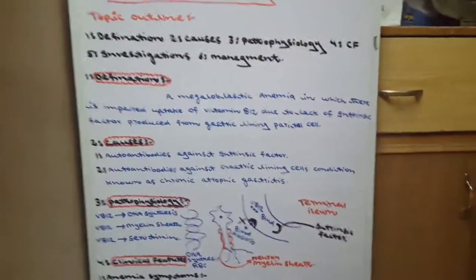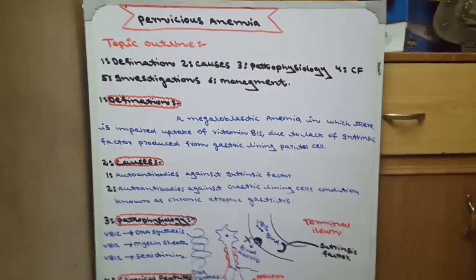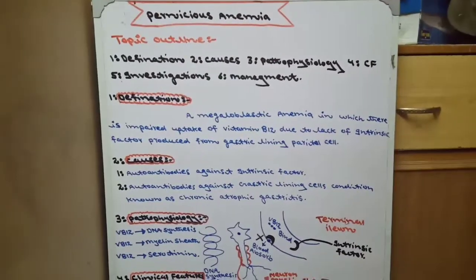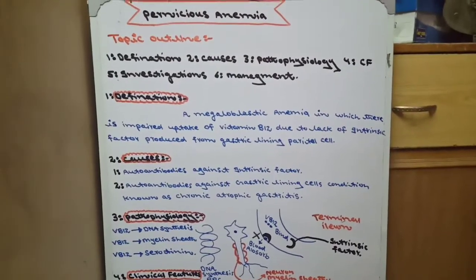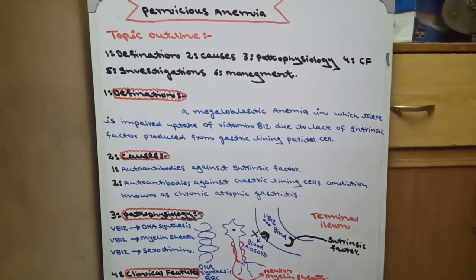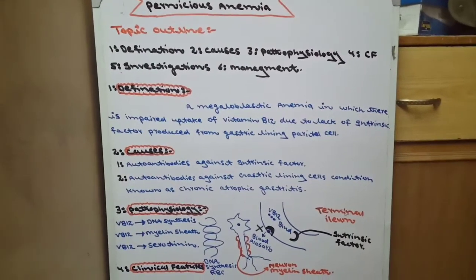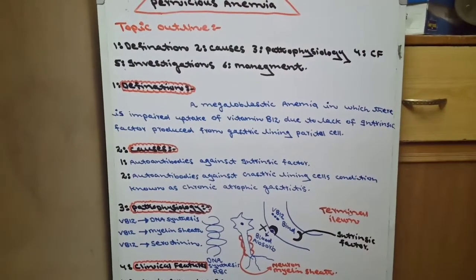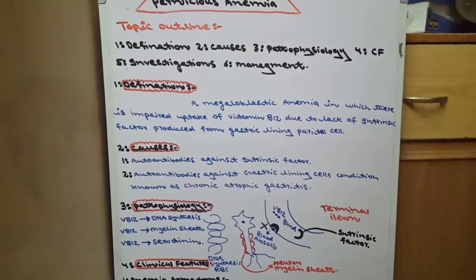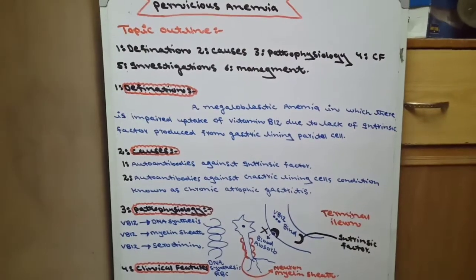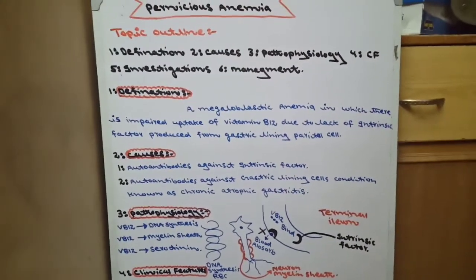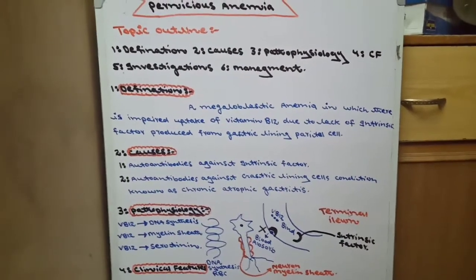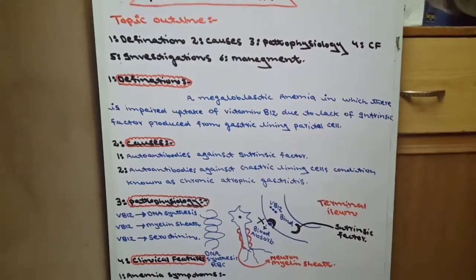Now the causes. The causes of pernicious anemia are two: autoantibodies against intrinsic factor, and autoantibodies against gastric lining cells, which cause destruction of gastric parietal cells.